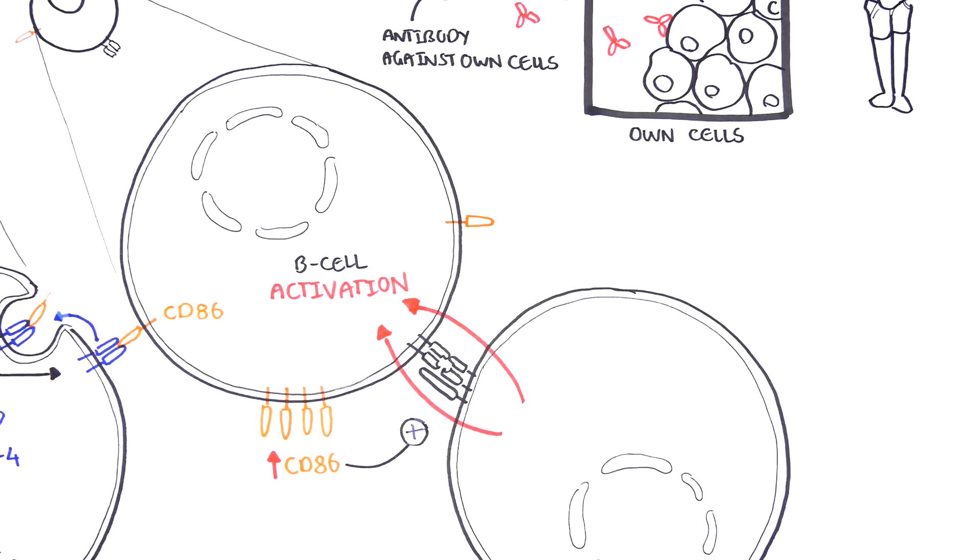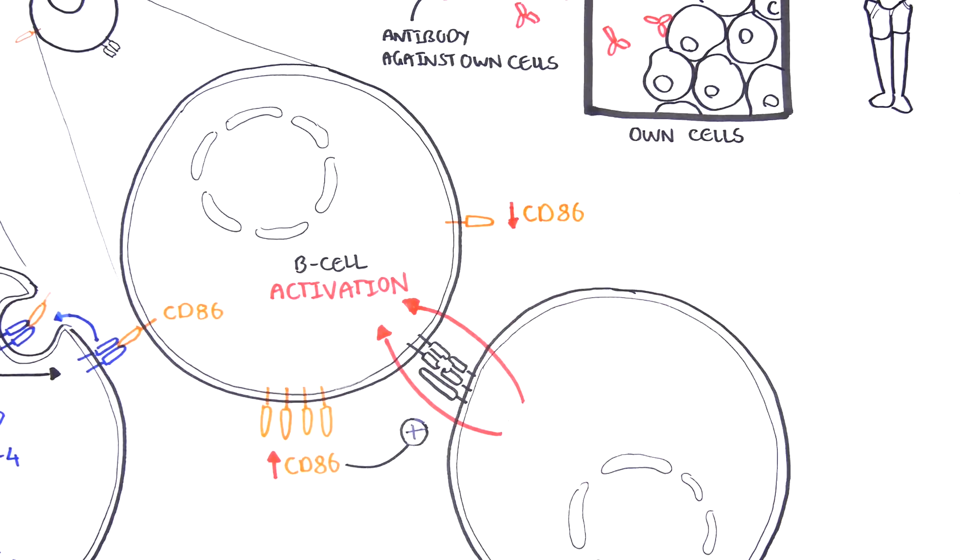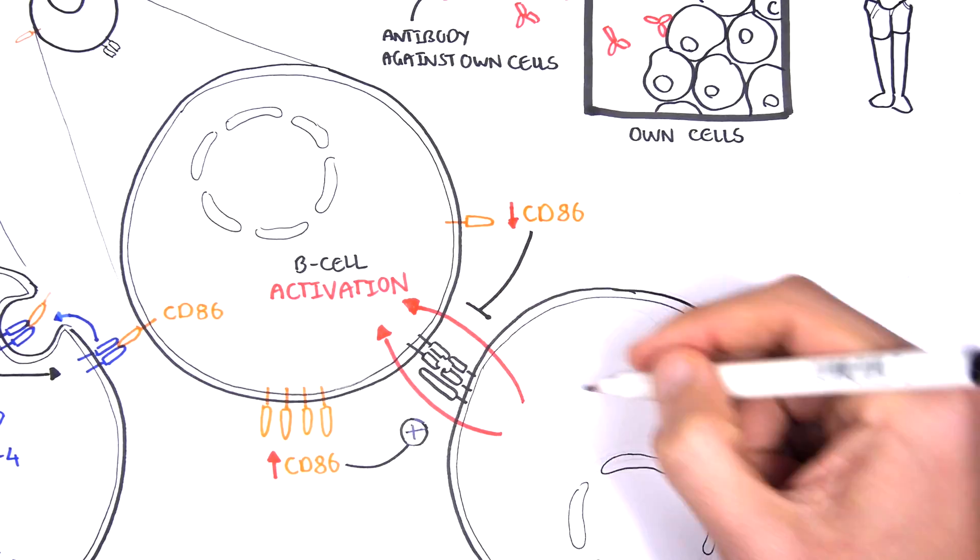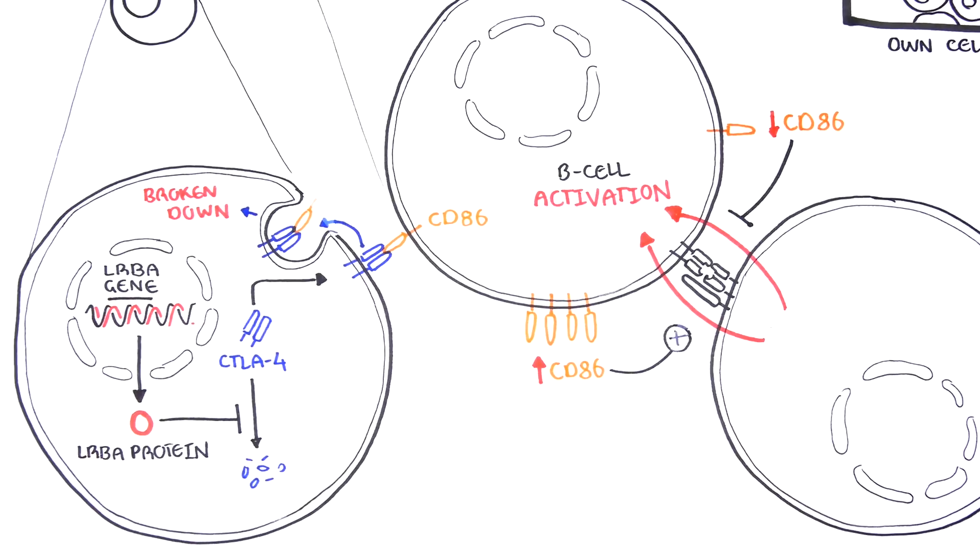If CTLA-4 has shaved off the CD86, helper T cells won't activate the B cell, effectively putting a brake on our immune response, so it doesn't harm any normal parts of our body.